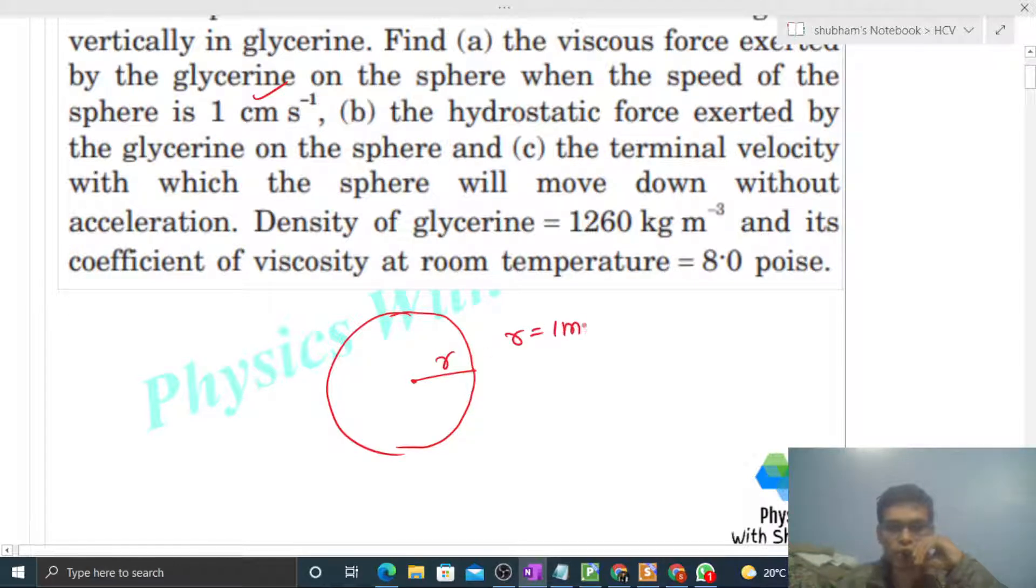So we have a metal sphere with radius 1 mm and mass 50 milligram. This glycerin moves vertically downward with a speed v, given as one centimeter per second.